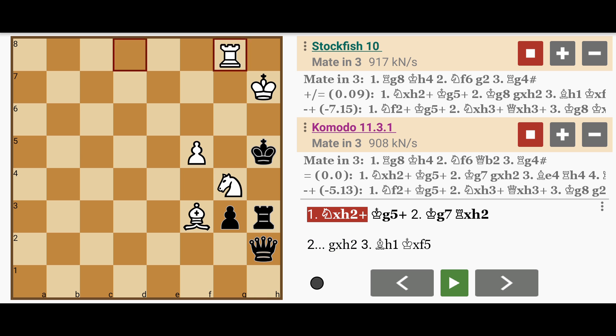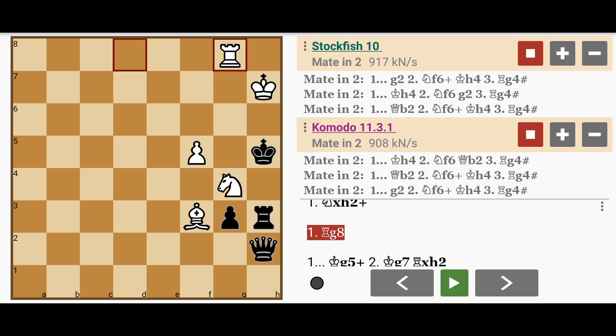White actually simply needs to play rook to g8, a quiet waiting move. Now this threatens, of course, knight to f6, creating a double check on the king, followed by rook to g4, checkmate.